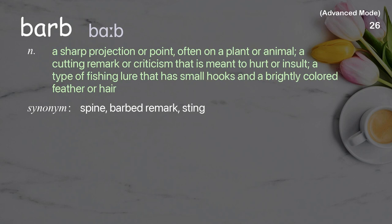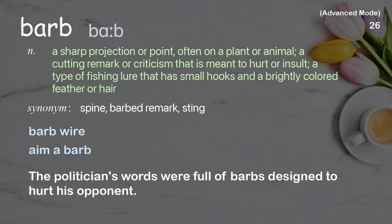Barb: A sharp projection or point, often on a plant or animal; a cutting remark or criticism meant to hurt or insult; also a type of fishing lure with small hooks and a brightly colored feather or hair. Examples: barbed wire, aim a barb. The politician's words were full of barbs designed to hurt his opponent.